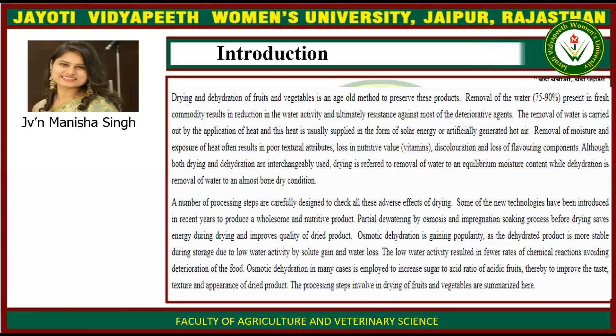Some new technologies have been introduced in recent years to produce wholesome and nutritive products. Partial dewatering by osmosis and impregnation soaking process before drying saves energy during drying and improves quality of the dried product. Osmotic dehydration is gaining popularity as the dehydrated product is more stable during storage due to low water activity by solute uptake and water loss. The low water activity results in fewer rates of chemical reactions, avoiding deterioration of the food. Osmotic dehydration in many cases is employed to increase the sugar-to-acid ratio of acidic fruits, thereby improving taste, texture, and appearance of the dried product.